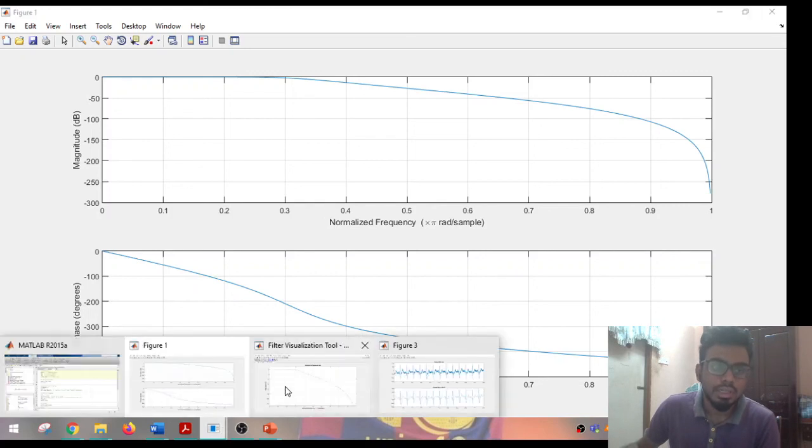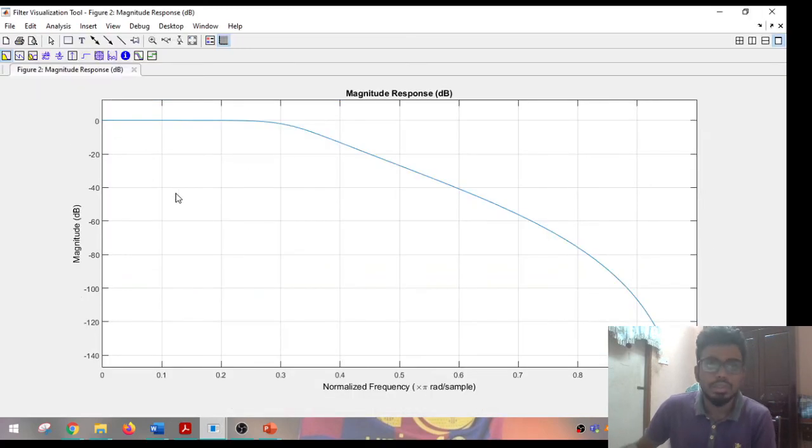We are going to figure two. This is the visualization tool, FV tool. So this is the magnitude response in Bode plot. As I mentioned earlier, this is passband, stopband. So the cutoff frequency omega C is somewhere around 0.3 to 0.35.